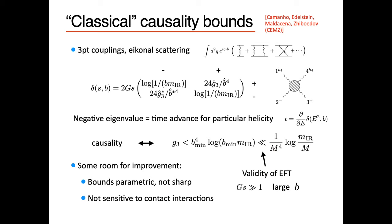These bounds are not sensitive to contact interactions like R to the fourth — things we see in string theory all the time. Question: Should this bound be on the absolute value of G3? The important thing is that it's bounding the size; the sign is not so important. This is in the regime where G times S is much greater than one — the semi-classical regime. So we're going to do things slightly differently.